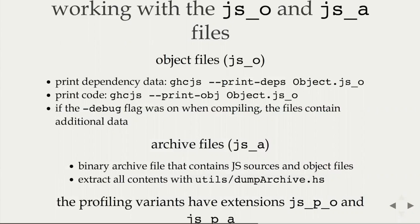If something seems fishy or you want to figure out what's in there, you can inspect the object files with these commands. If you compile a module with the -debug flag — making sure it actually recompiles — then GHCJS records additional data inside the .o.js files. At the moment it's the optimized STG that was used to produce the JavaScript, so you can get the STG back after the fact. It's mostly something I've been using for debugging purposes, but sometimes passing the -debug flag gives you some more information.